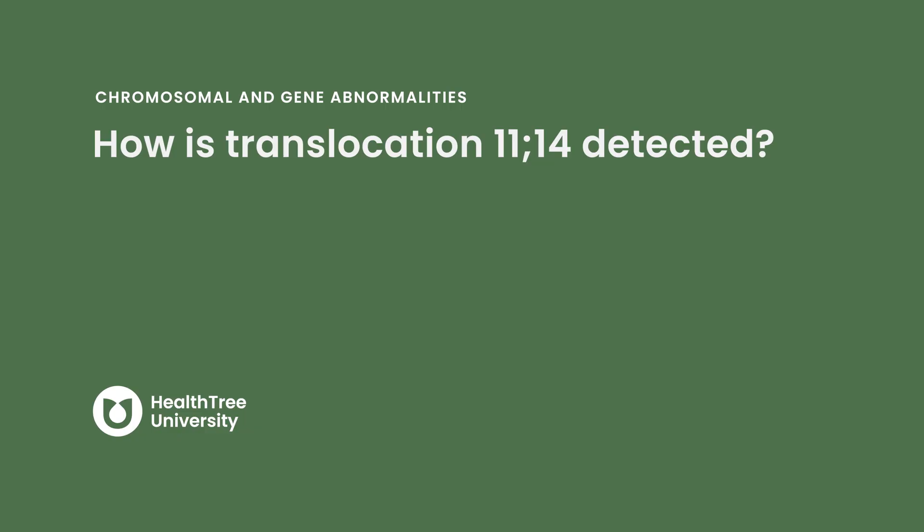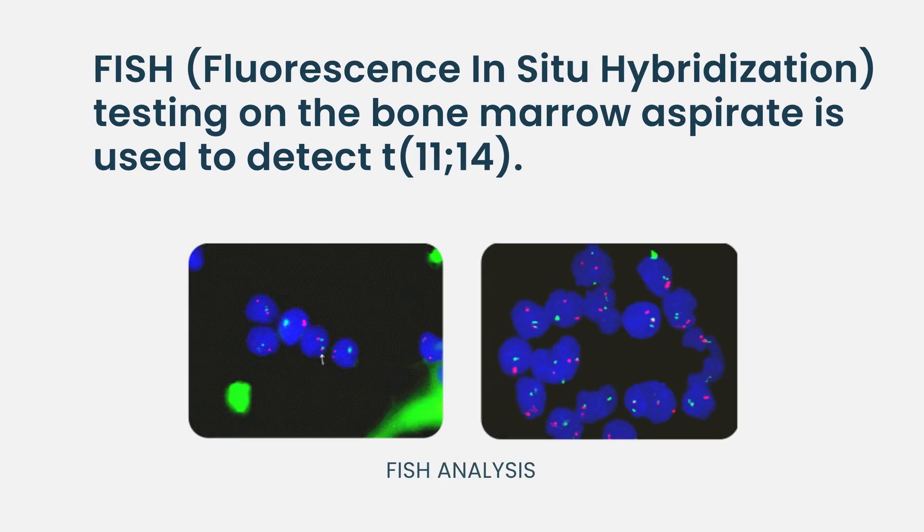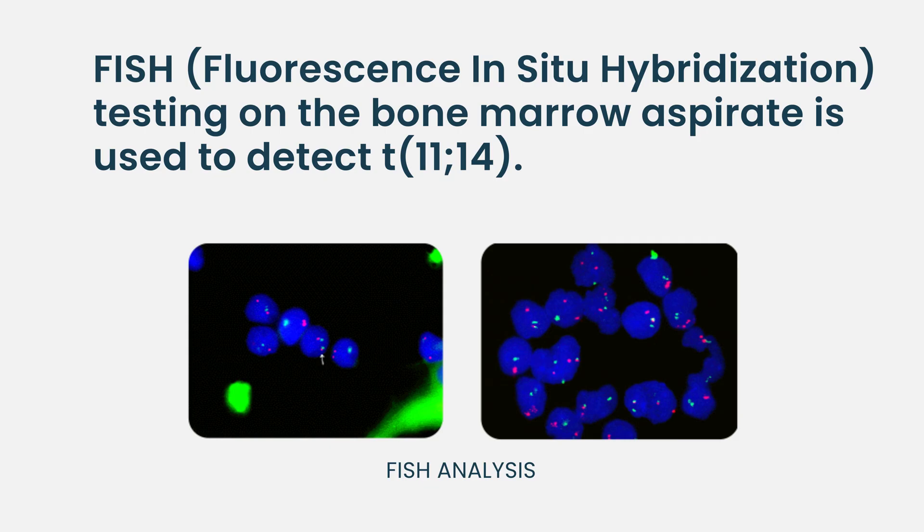How is translocation 11;14 detected? We figure out what translocations and genetic changes are present usually from bone marrow biopsies, and sometimes from plasmacytomas that have been biopsied. Our pathologists perform a FISH test that identifies what changes are in those chromosomes — that's how we determine if someone has 11;14, 4;14, or a 17p deletion.